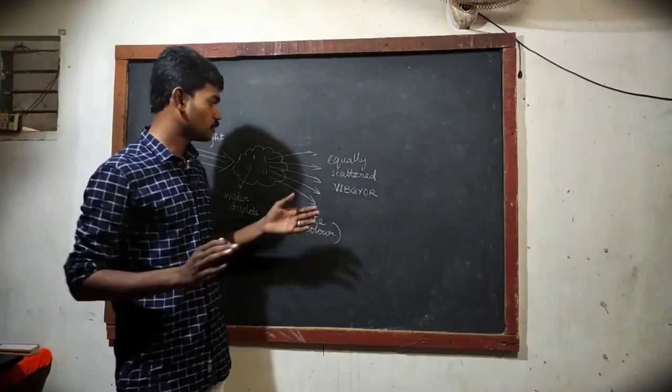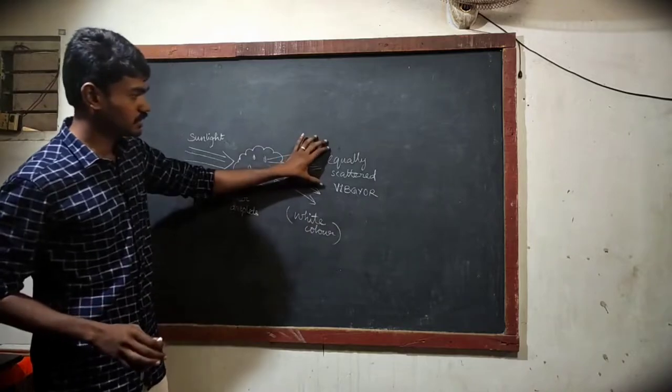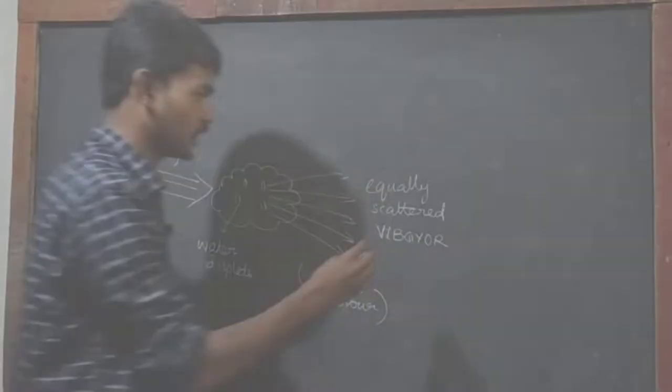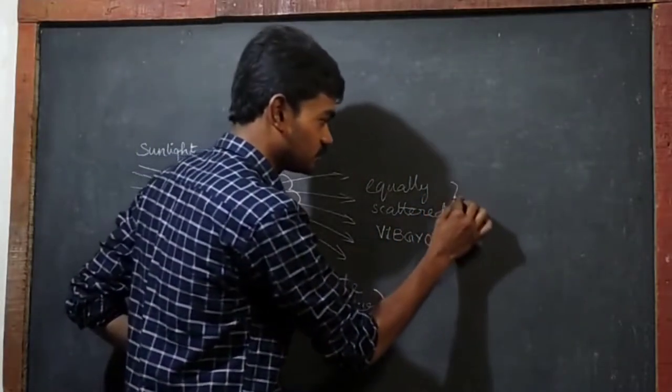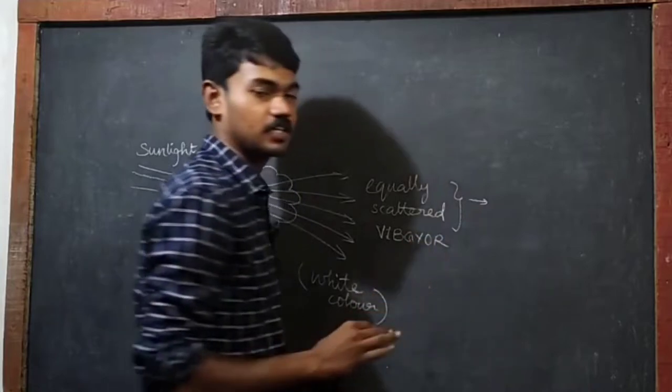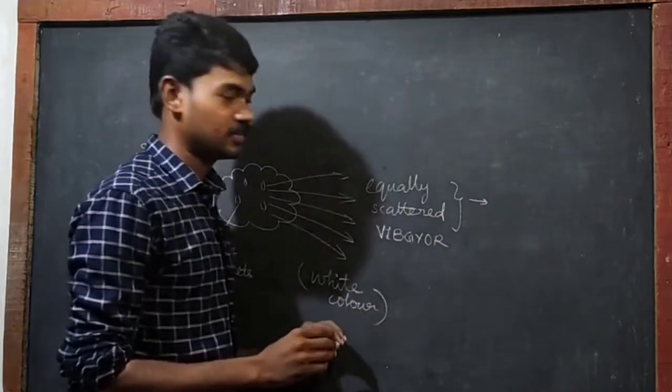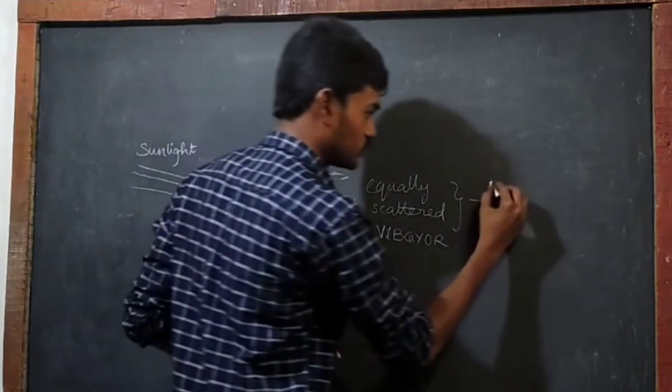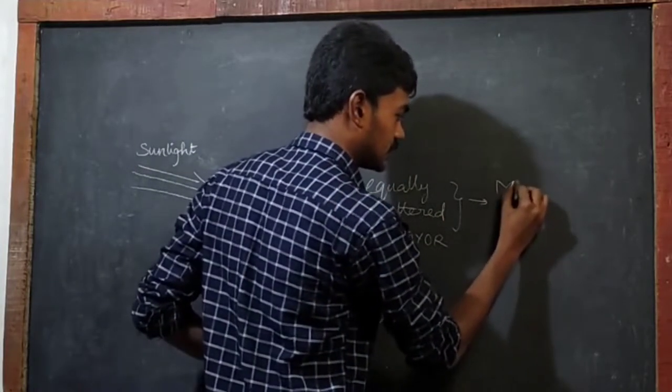This is an important point — equal scattering is occurring here. This type of scattering is known as Mie scattering.